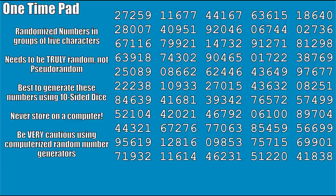So what exactly is a one-time pad? It's really simple — all it is is randomized numbers in groups of five characters. The very important part is that these numbers are truly randomized, not pseudo-random. Typing numbers on your keyboard is pseudo-random; human beings tend to develop patterns when trying to pick numbers randomly. That's where the ten-sided dice come in — you throw them on a table and get five numbers at random to start building this table.